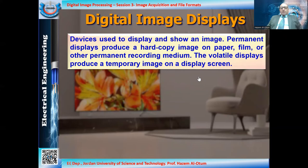In general, an image display is a device used to display and show an image. We have two types of displays: permanent displays that produce a hard copy of an image on paper, film, or another permanent recording medium; and volatile displays, which produce a temporary image on a display screen that vanishes when the power is switched off.